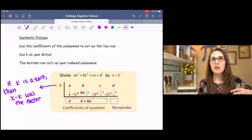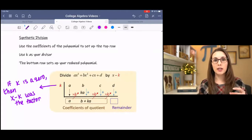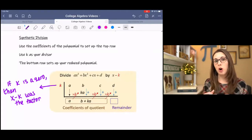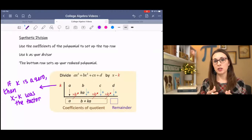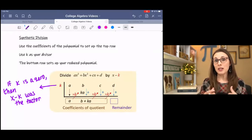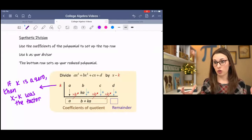Synthetic division uses one of the x-intercepts or one of the factors to help break down the polynomial into something smaller. And you can keep using these factors or these zeros to break it down into something that you can either factor or use the quadratic formula on, depending on how big the polynomial was to start with.